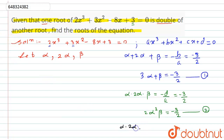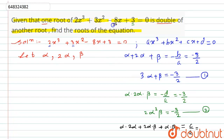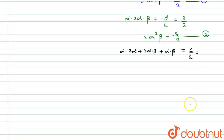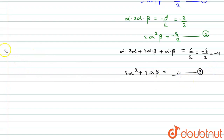Similarly, the sum of products of pairs: α·2α + 2α·β + α·β = c/a. The value of c is -8 and a is 2, so this equals -8/2 = -4. Simplifying: 2α² + 2αβ + αβ = 2α² + 3αβ = -4. Let this be equation number 3.